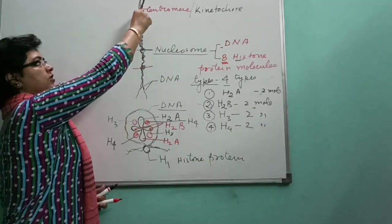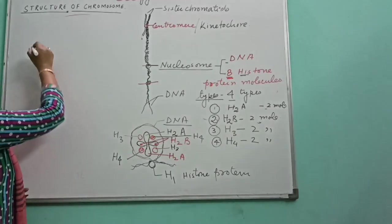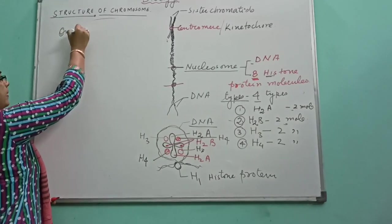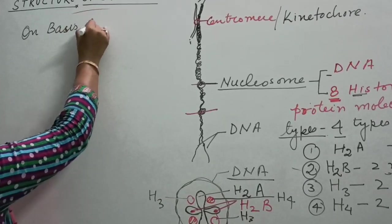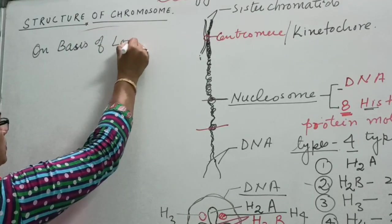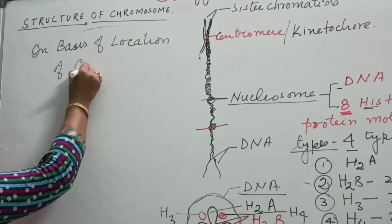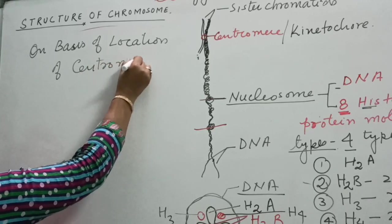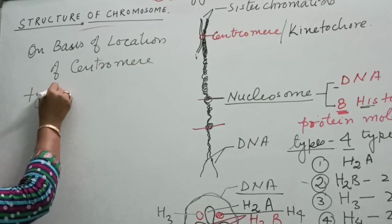On the basis of location of centromere, these chromosomes are of four types. So on basis of location of centromere, types of chromosomes.